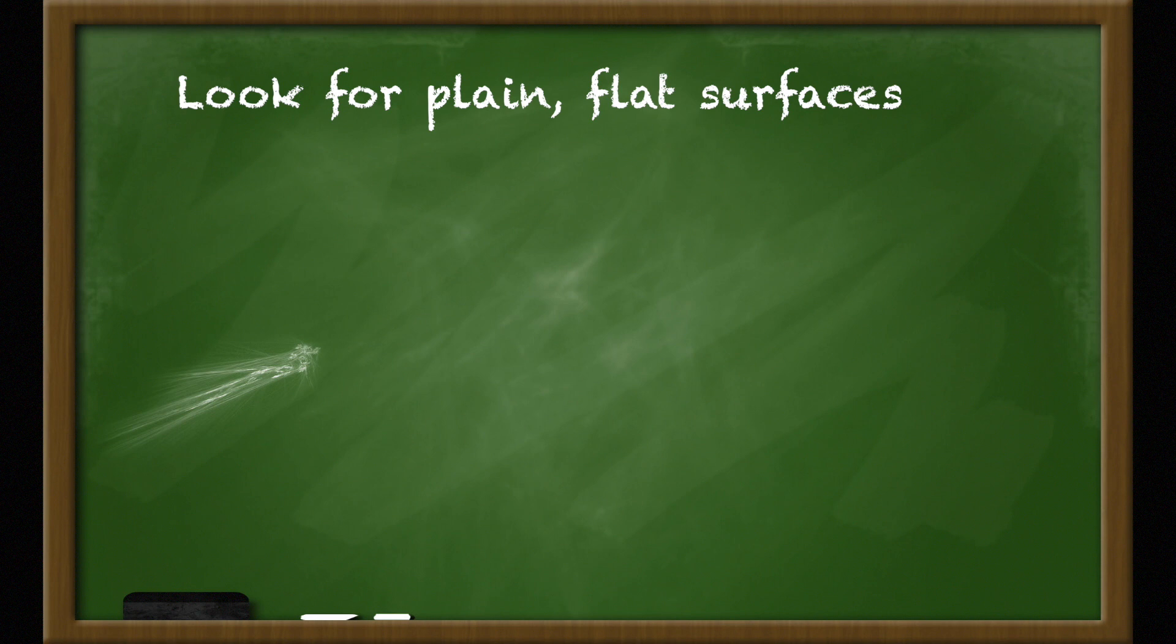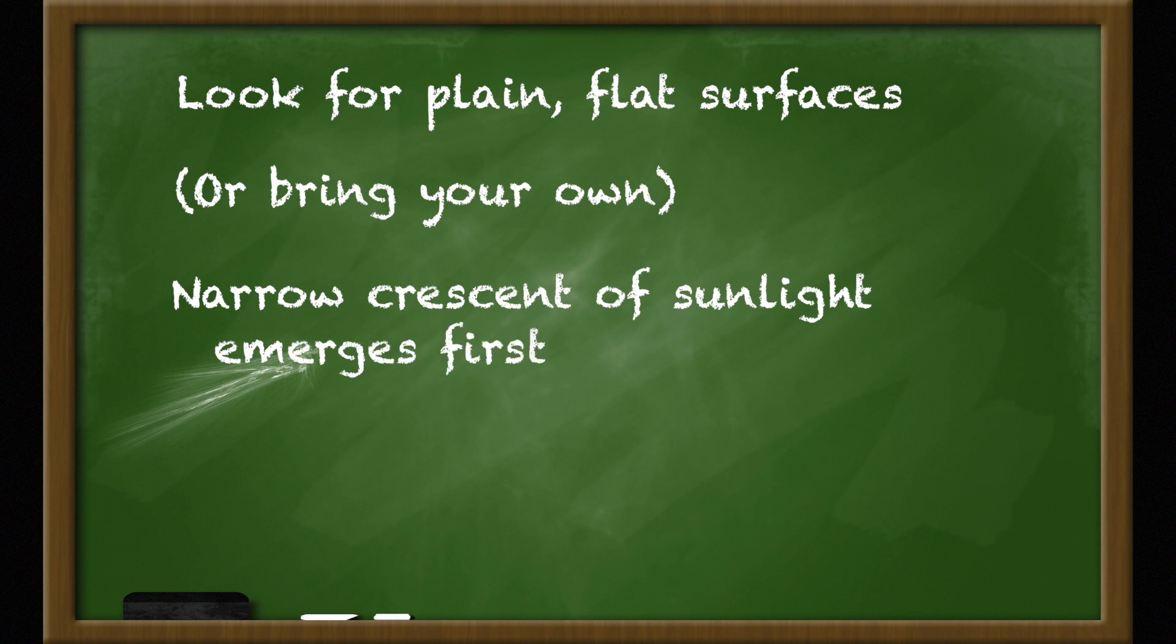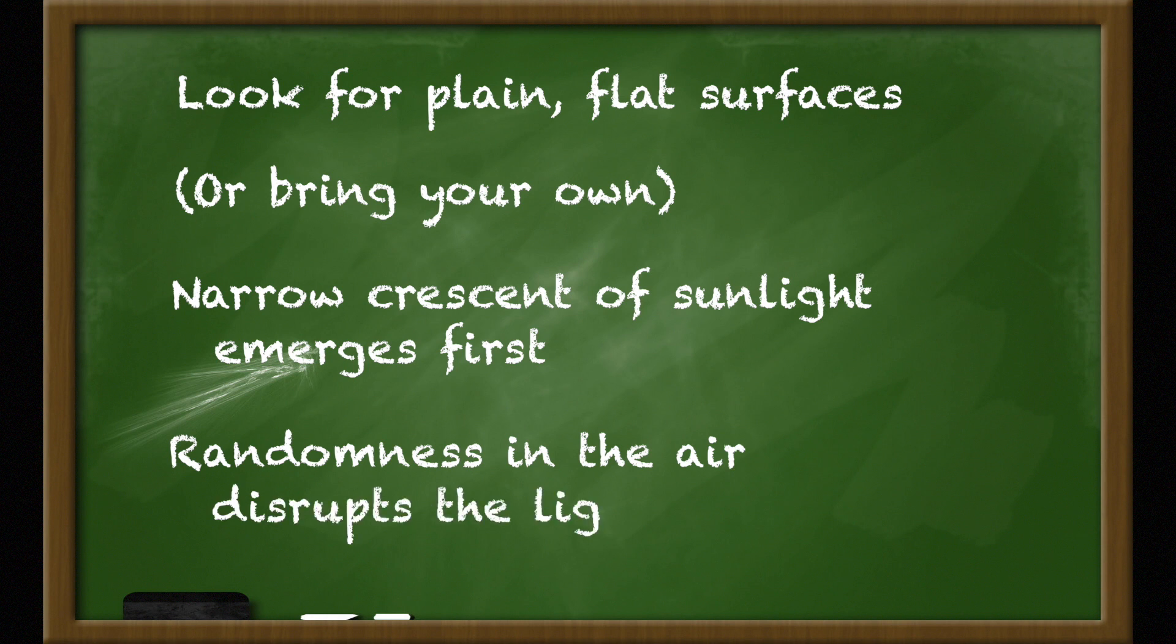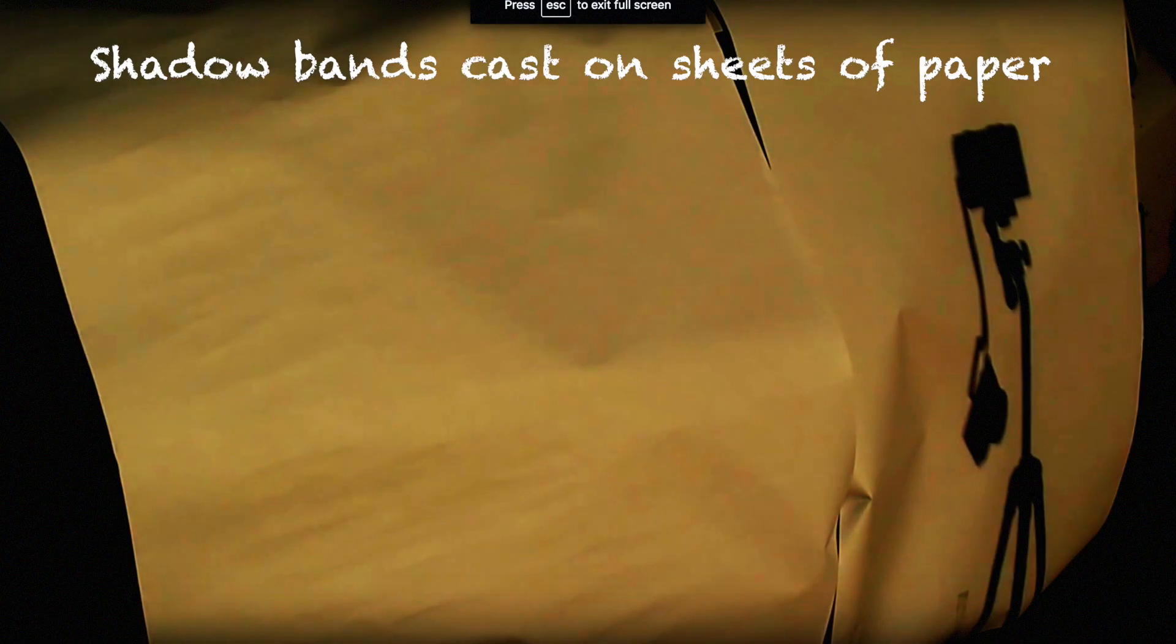Reason number five, shadow bands. As the eclipse comes to an end, keep an eye on any plain flat surfaces around you. You might even want to set out some large sheets of paper in advance for this. Because in the very first moments, as sunlight begins to emerge from behind the moon, only the narrowest crescent of light is shining on the earth. And if the band of light is narrow enough, then tiny inconsistencies in the atmosphere caused by wind and pockets of heat can disrupt and interfere with the light in random and chaotic ways. It's the same effect that makes the narrow beam of light from distant stars twinkle in the nighttime. Except this time, the twinkling light is so bright that you can actually see it casting twinkling shadows.